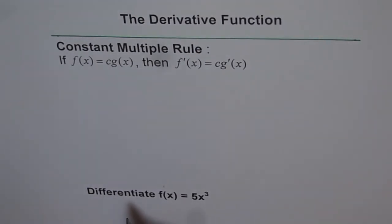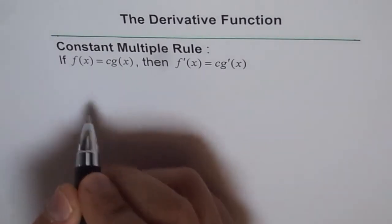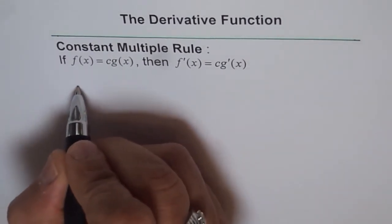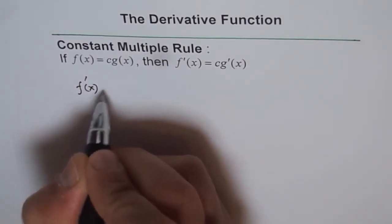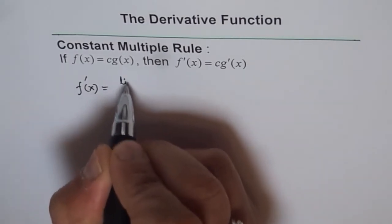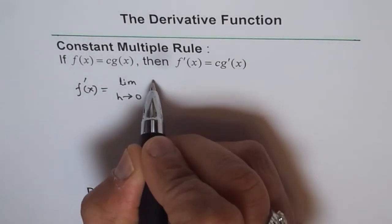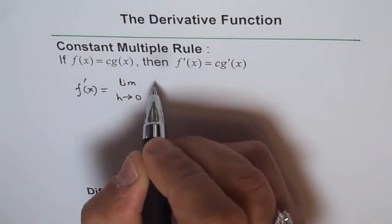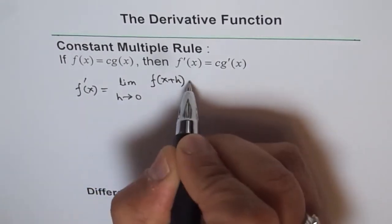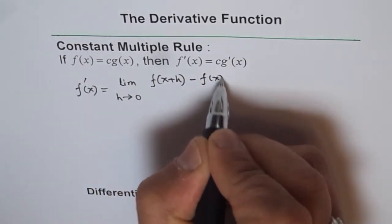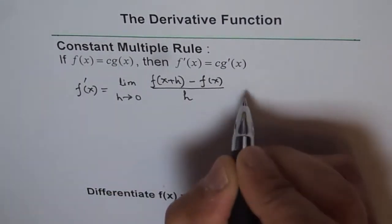Now let's derive this formula. So we have f of x equals to c times g of x. Then from definition, what is the derivative of f of x? It is the limit when h approaches 0, which is f of x plus h minus f of x over h. That's the definition.